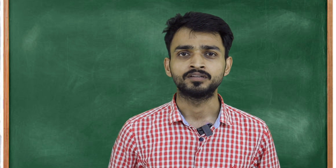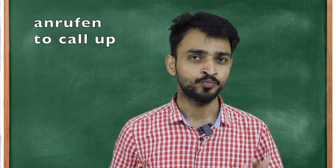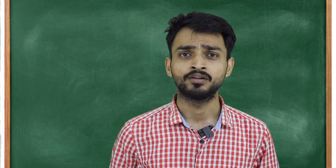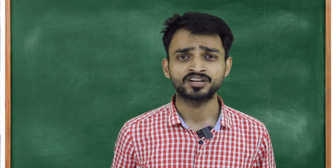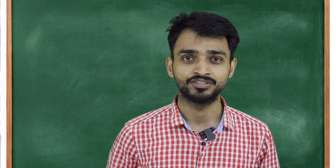Next verb: 'anrufen' — to call up. This is a separable verb. I am calling my brother. Who is calling? I. To whom? My brother. Again, I am the subject. Whom are you calling? That is my accusative object. Now, a person can also be an accusative object — no problem. I am calling up my brother. I have made almost all types of videos available on my channel — more than 1000 videos. Watch them carefully with full attention and concentration, and you will see the result.